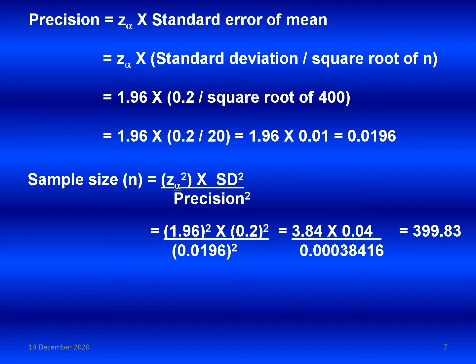Sample size equals Z alpha squared multiplied by standard deviation squared divided by precision squared. Substituting: 1.96 squared multiplied by 0.2 squared, divided by 0.0196 squared. That is 3.84 × 0.04 divided by 0.00038416. The sample size is 399.83, which we round to 400. So 400 is the required sample size.